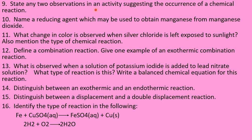Question ten: name the reducing agent which may be used to obtain manganese from manganese dioxide — this is a repeated question, please do it. Next: what change in color is observed when silver chloride is left exposed to sunlight? Also mention the type of chemical reaction. It comes under the photochemical reaction, so write the chemical equation and explain what happens.